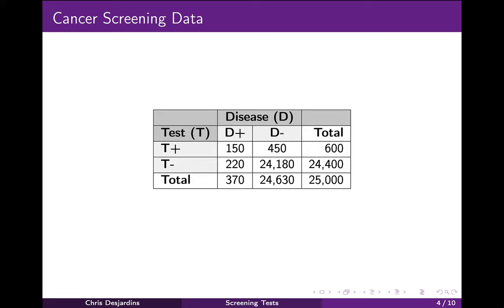The prevalence of a given disease may vary from one population to another — by region, by age, by gender, by ethnicity, and so forth. So the population of interest must be specified.